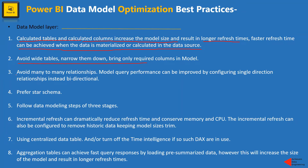Another point is to avoid many-to-many relationships. If you have multiple tables in your model, make sure to avoid many-to-many relationships. Model query performance can be improved by configuring single-directional relationships instead of bi-directional ones. Try to avoid many-to-many relationships and you can also use cross-filtering if the situation calls for it.